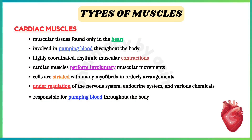The first one is cardiac muscles. Cardiac muscles are a type of muscular tissue found only in the heart, involved in pumping blood throughout the body via highly coordinated rhythmic muscular contractions. Cardiac muscles perform involuntary muscular movement. Cardiac muscle cells are striated with many myofibrils in orderly arrangements, and are under regulation of the nervous system, endocrine system, and various chemicals.